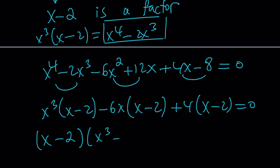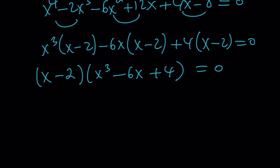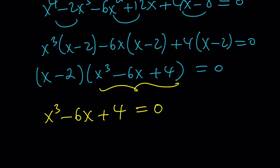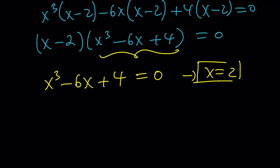Factoring out x minus 2, we get x cubed minus 6x plus 4 equals 0. We got a cubic, which is nice because it's missing x squared — that's called a depressed cubic. We already know x equals 2. To find the other solutions, we have to solve the cubic using the Rational Root Theorem again. A quick check shows that x equals 2 is a solution again, so it's a double root — which you couldn't tell initially. You can continue by dividing by x minus 2 and you'll get a quadratic factor with two roots.